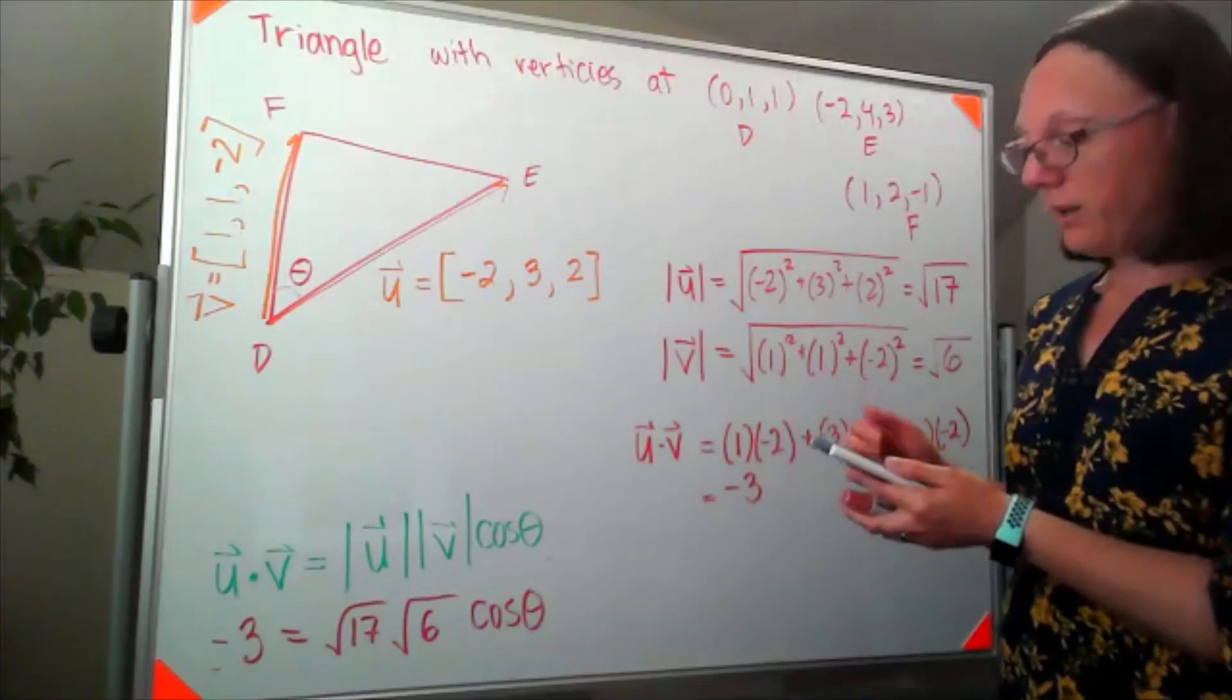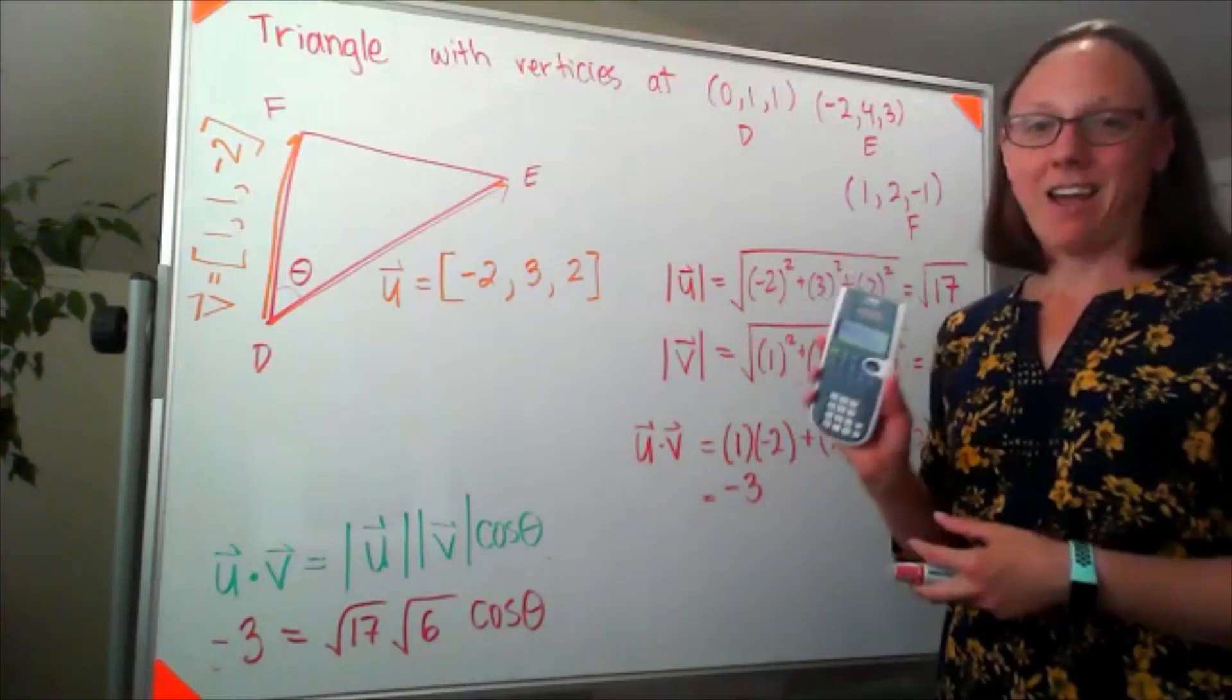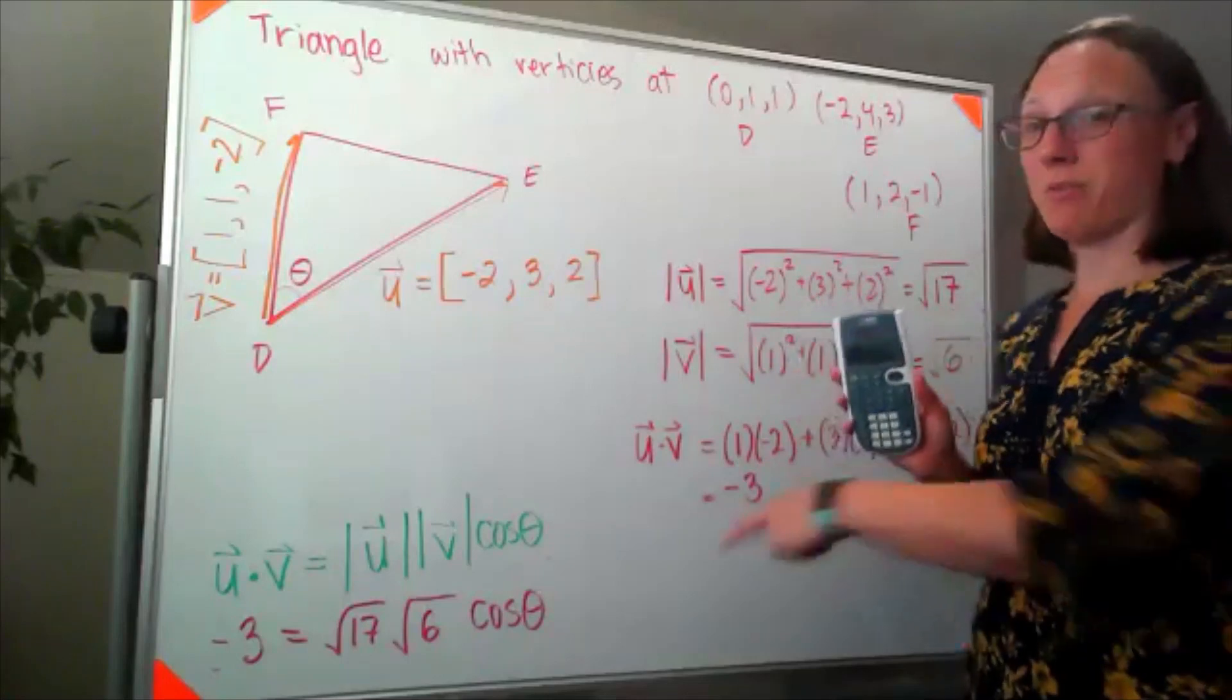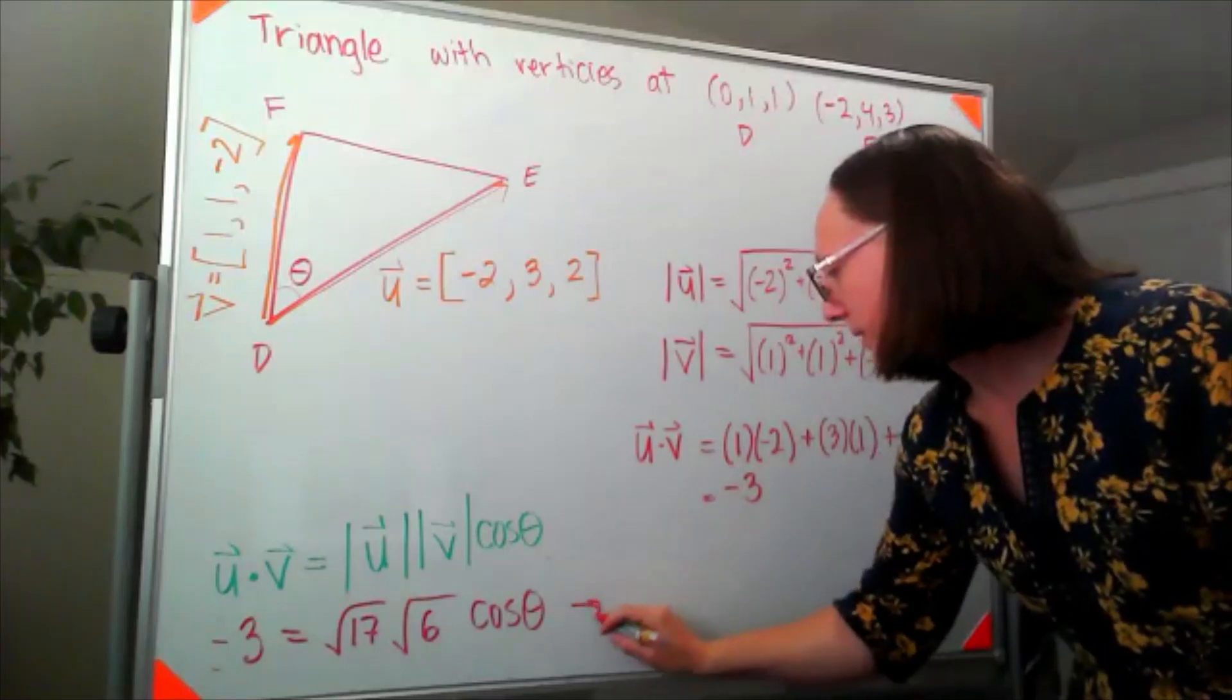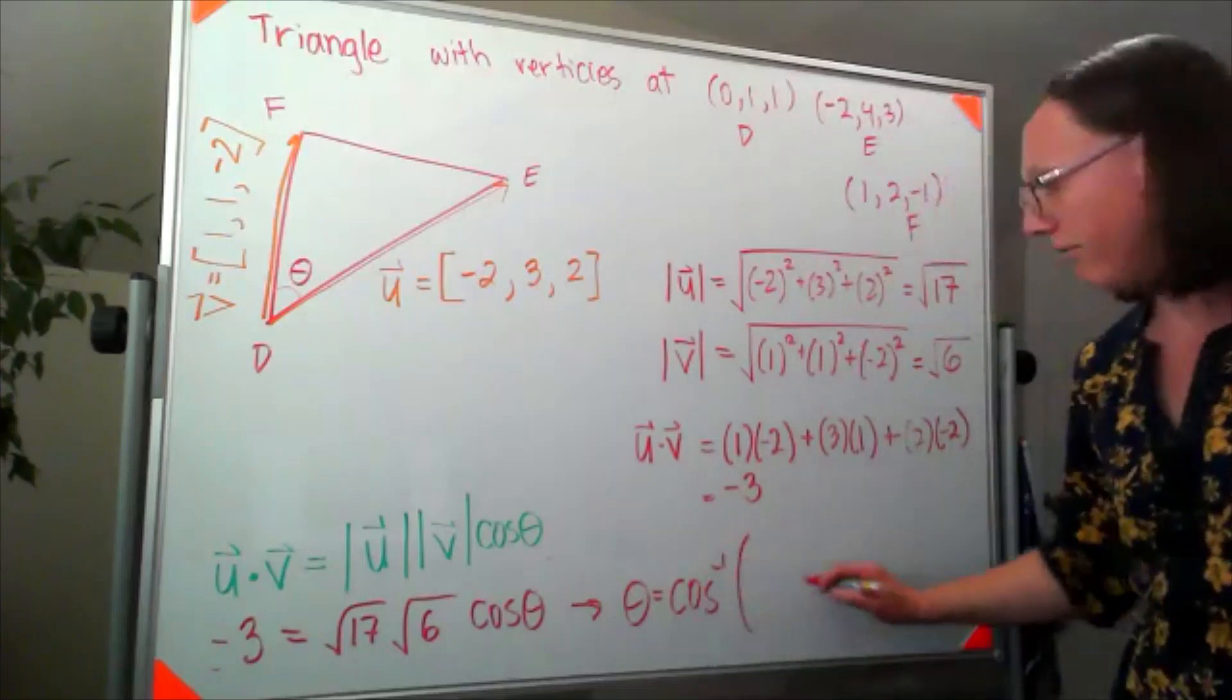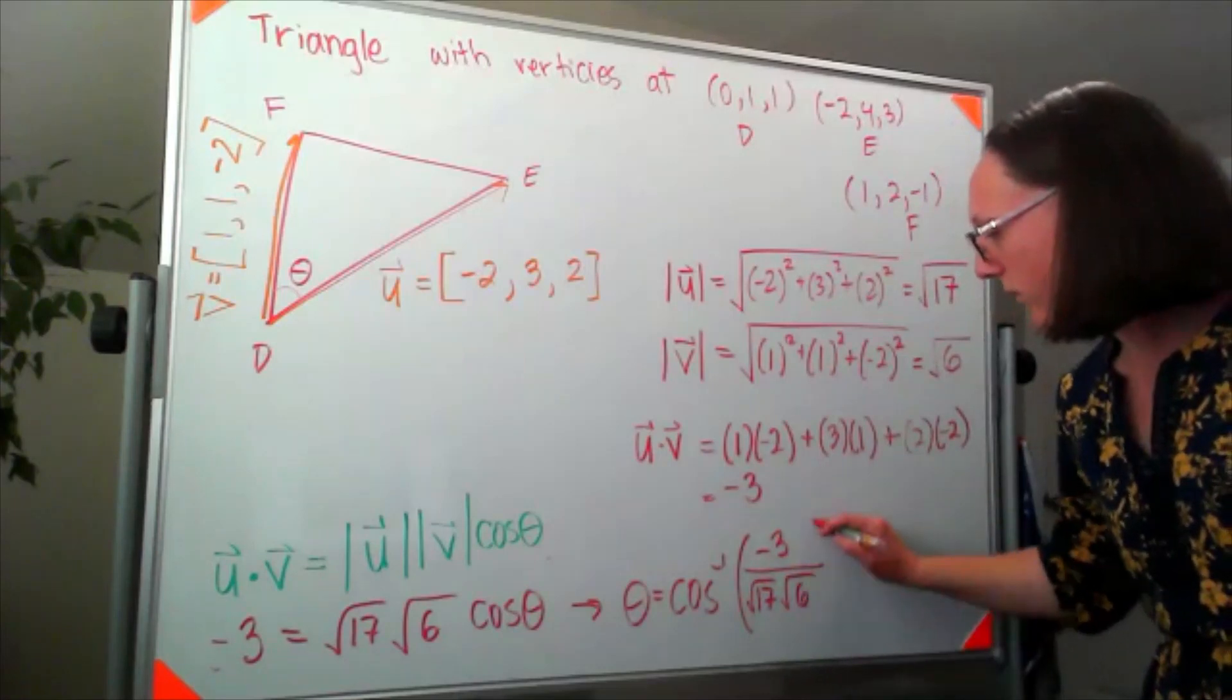One thing to make sure, we have been asked to report our answer in degrees. So I know most of the time in calculus, I've got mine set in radians. You want to make sure to set it to degrees before finishing this problem. So this tells me that theta is equal to the inverse cosine of negative three over the square root of 17 times the square root of six.